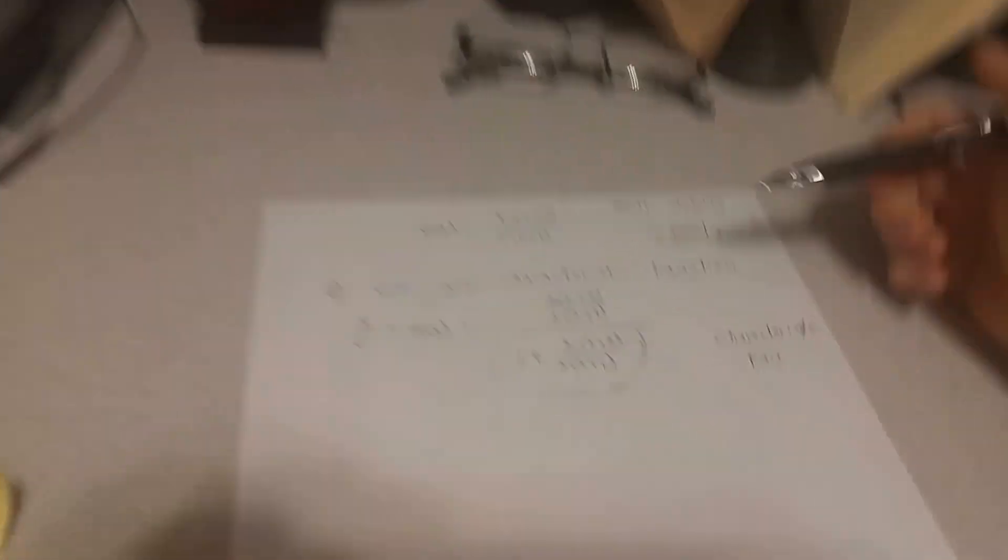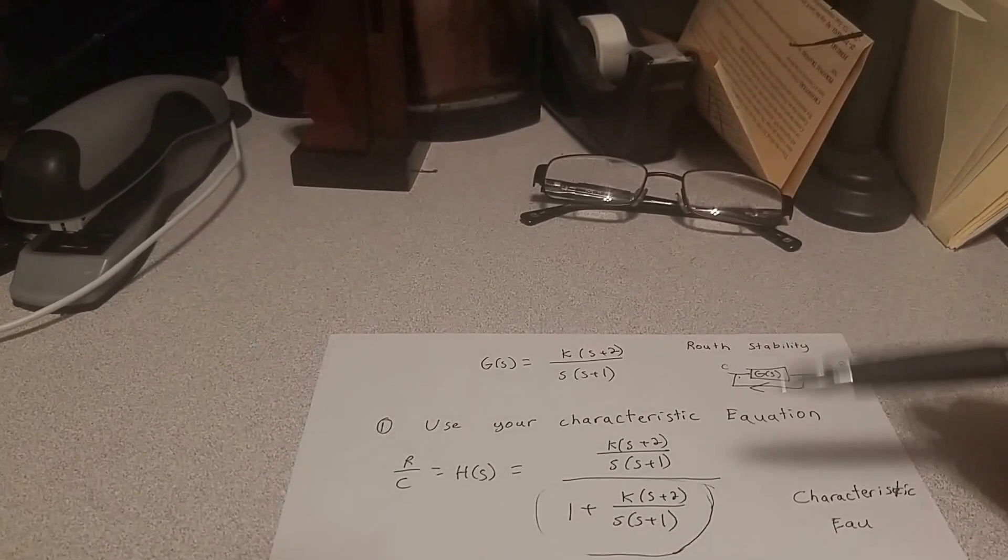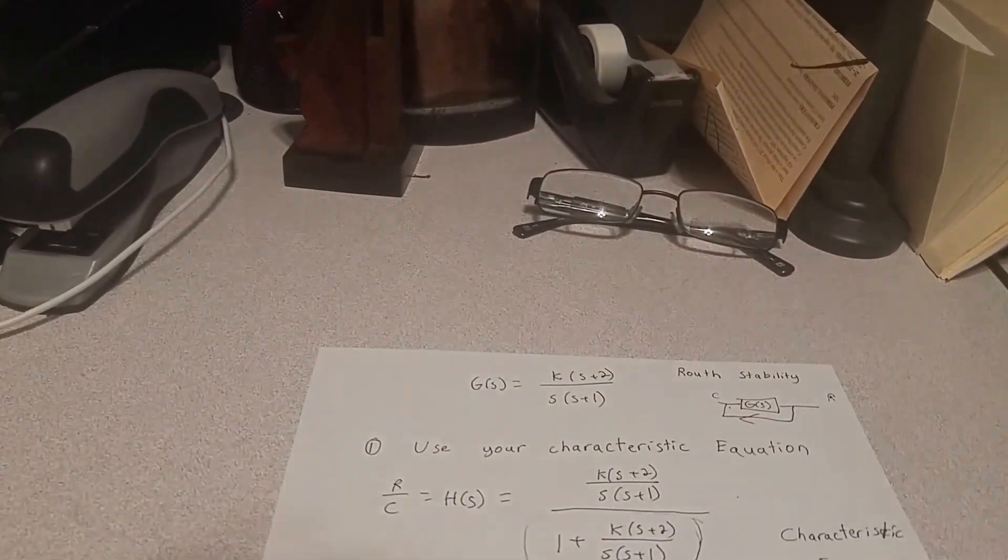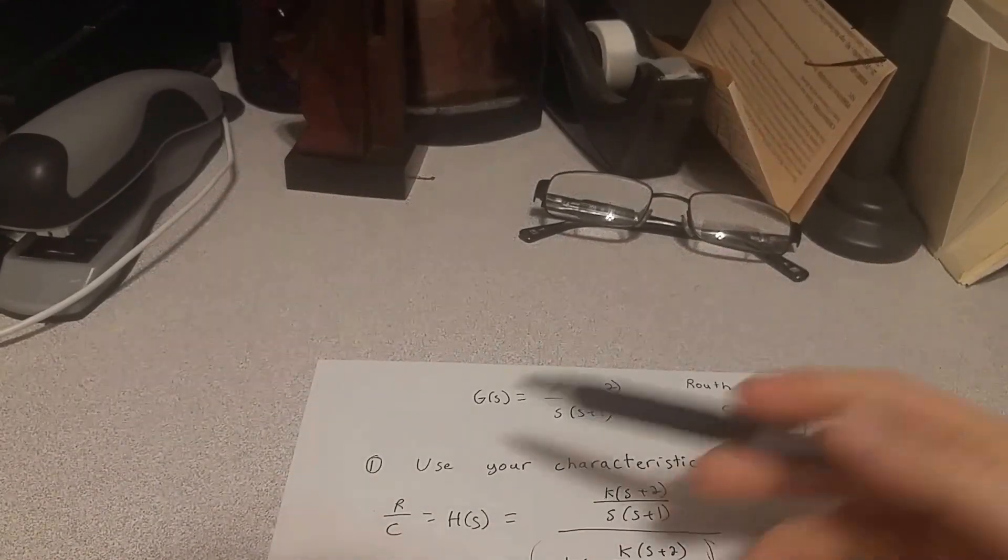Now, if we want to find the poles of this function, you probably remember from algebra that a pole happens when the denominator is equal to 0. If the numerator was equal to 0, that would be a zero, because 0 divided by anything is 0.